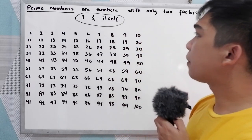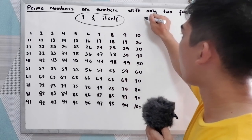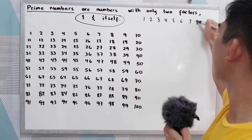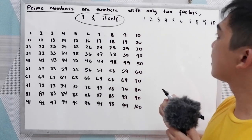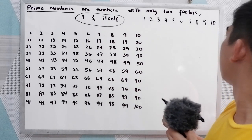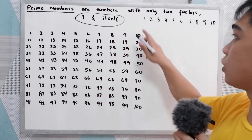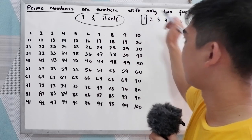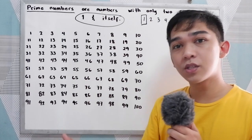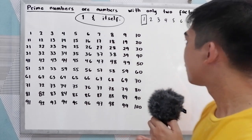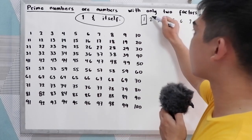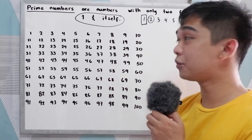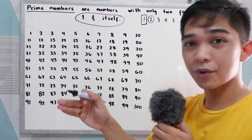Now, from one to ten, let us determine what are the prime numbers. One is a special number — it is not a composite nor a prime number. So our smallest prime number is two, because the factors of two are two and one only.